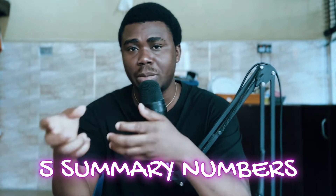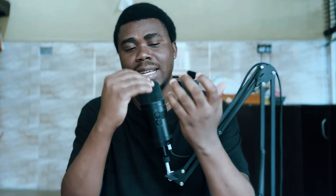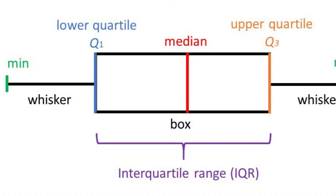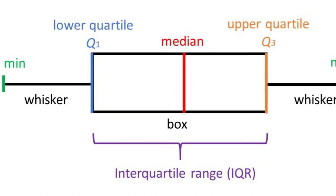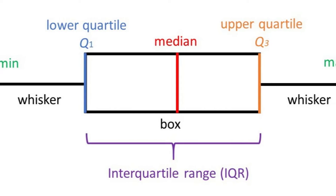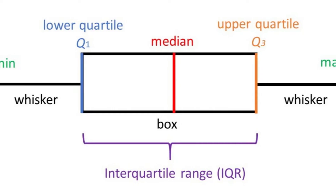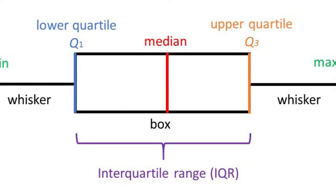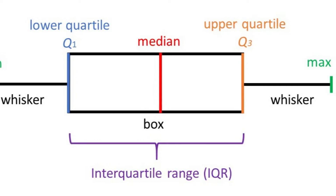Those five lines lead us to what we call the five summary numbers — the numbers we use to construct a box plot. The five summary numbers are: the minimum value, the first quartile, the median, the third quartile, and the maximum value.